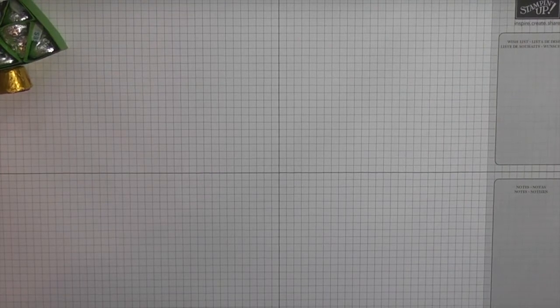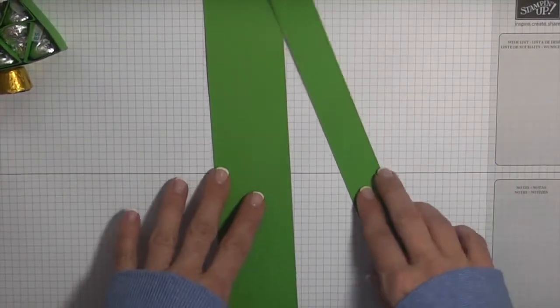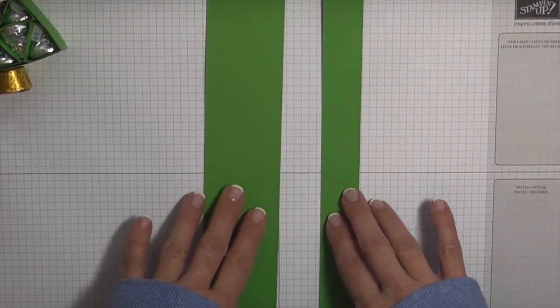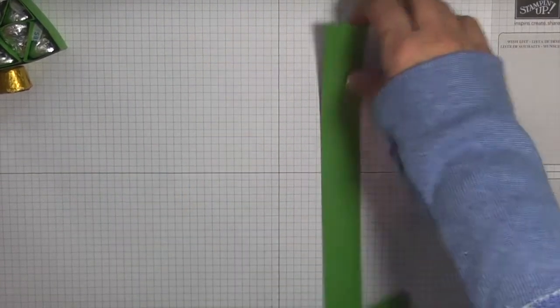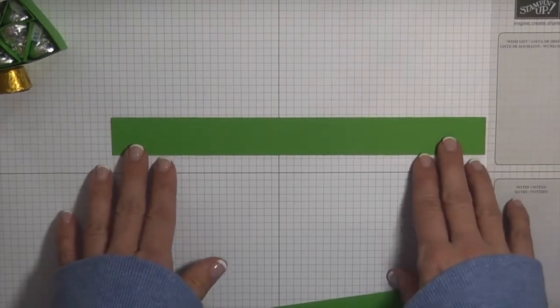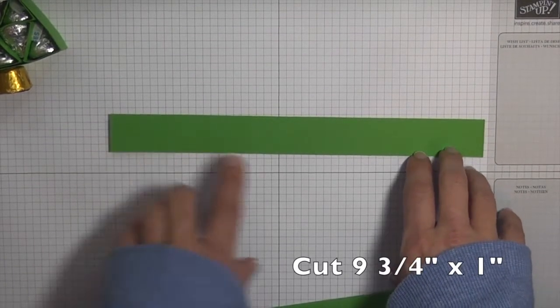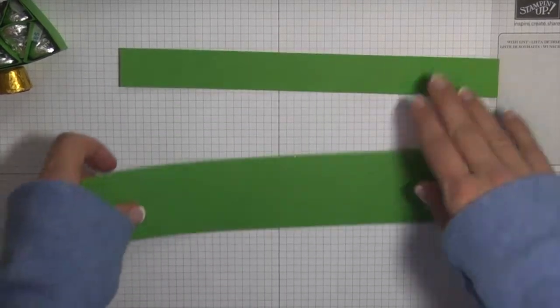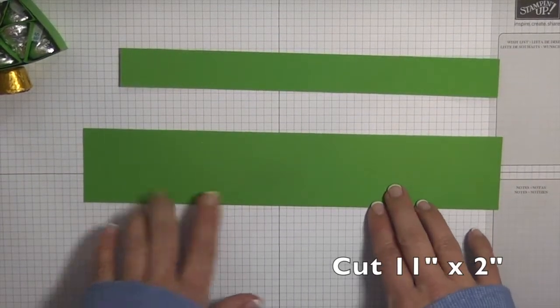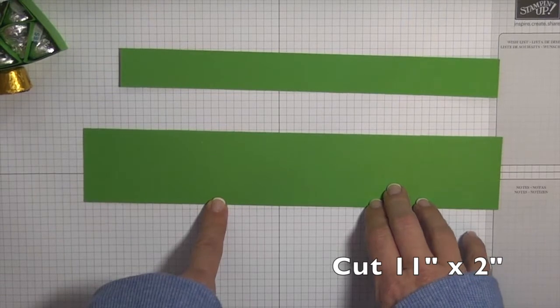So I'm just going to put this off to the side. The first thing you are going to need to do is to get two strips of Cucumber Crush. That's the paper that I'm using today. And I cut this first strip to nine and three quarter inches by one inch.